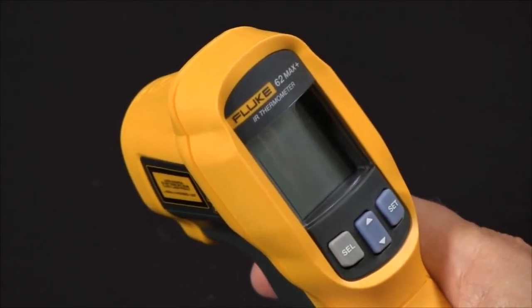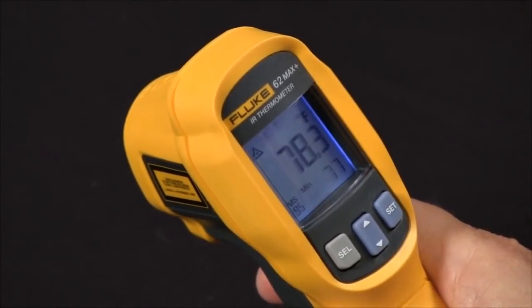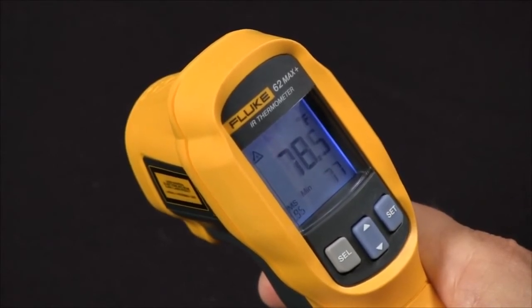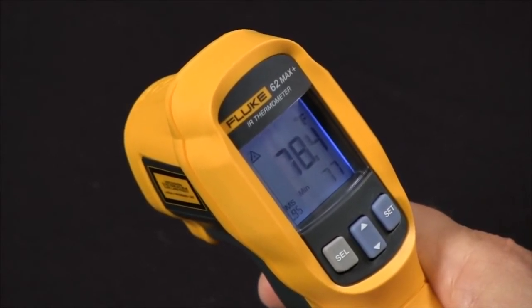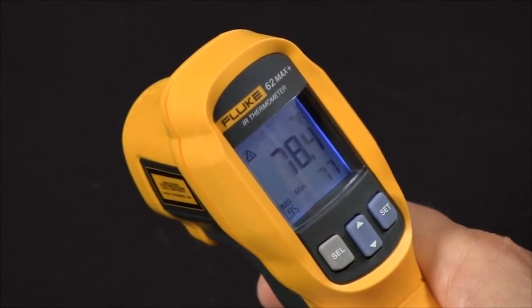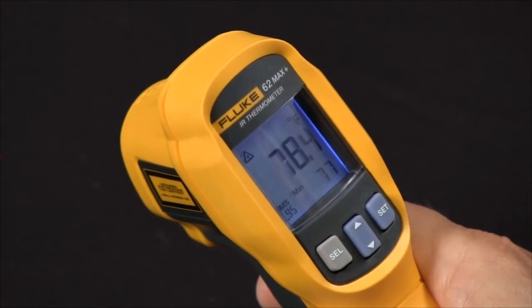The Fluke 62 Max and the 62 Max Plus are handheld IR thermometers. The 62 Max has a distance to spot ratio of ten to one and the 62 Max Plus has a distance to spot ratio of twelve to one.